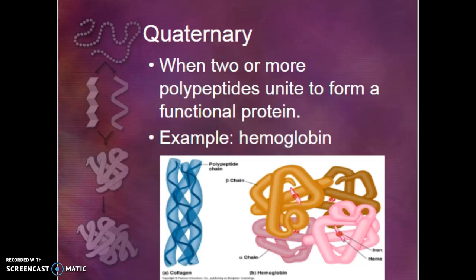I know I'm going quickly through this. Quaternary structure, we're going to combine tertiary structures. This is hemoglobin as an example. Here's collagen. Collagen is several helices wound together. Picture a rope.